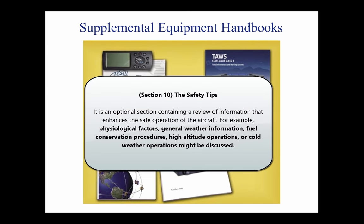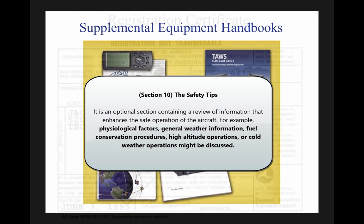Section 10: The Safety Tips section is an optional section containing a review of information that enhances the safe operation of the aircraft. For example, physiological factors, general weather information, fuel conservation procedures, high-altitude operations, or cold-weather operations might be discussed.